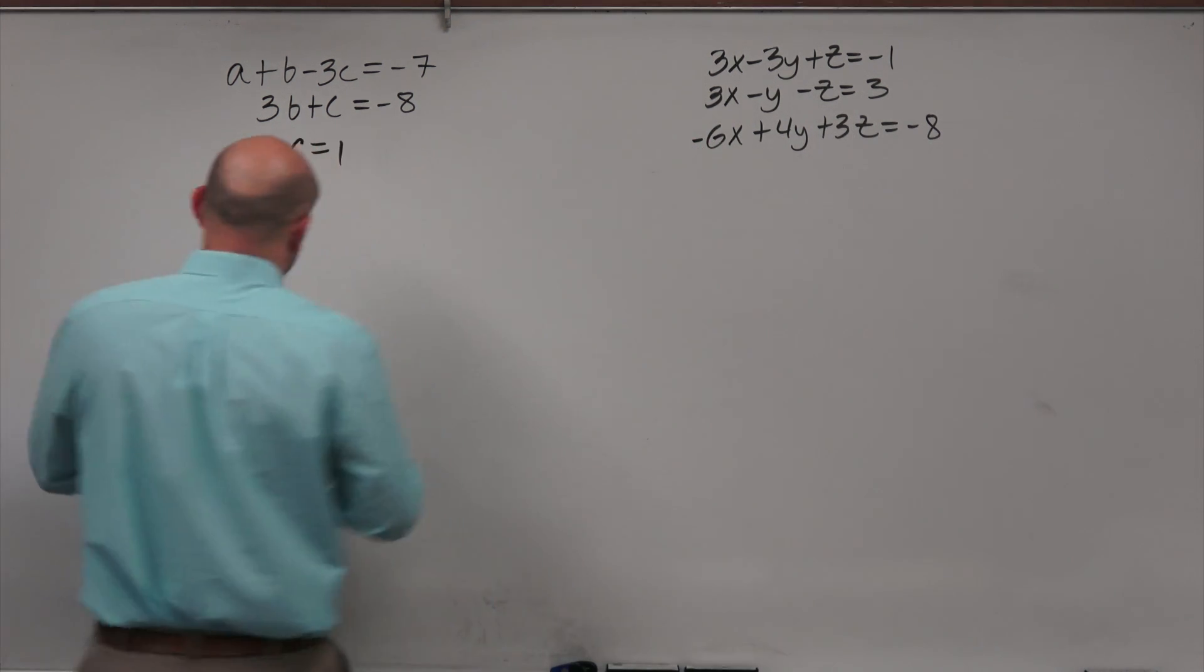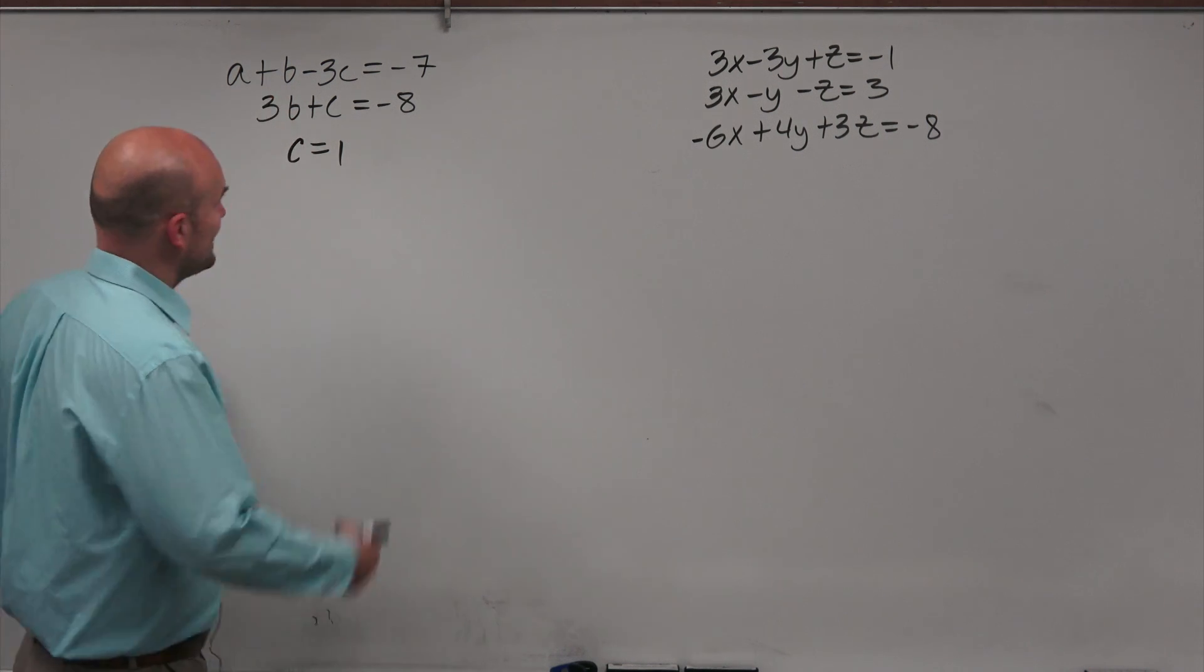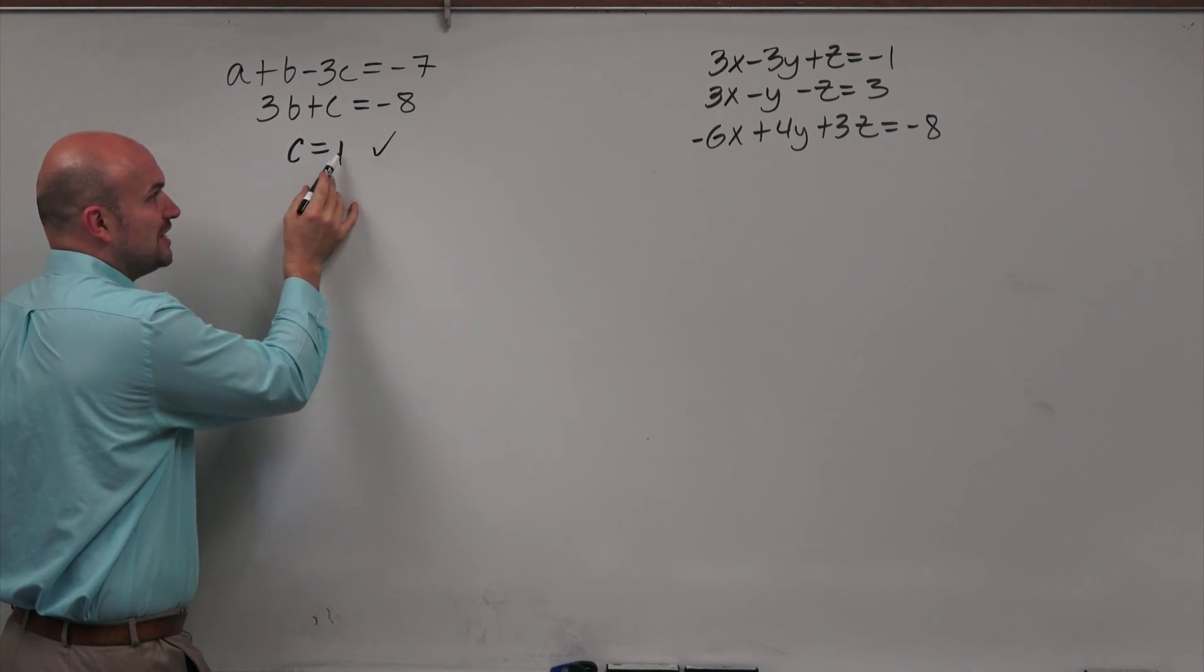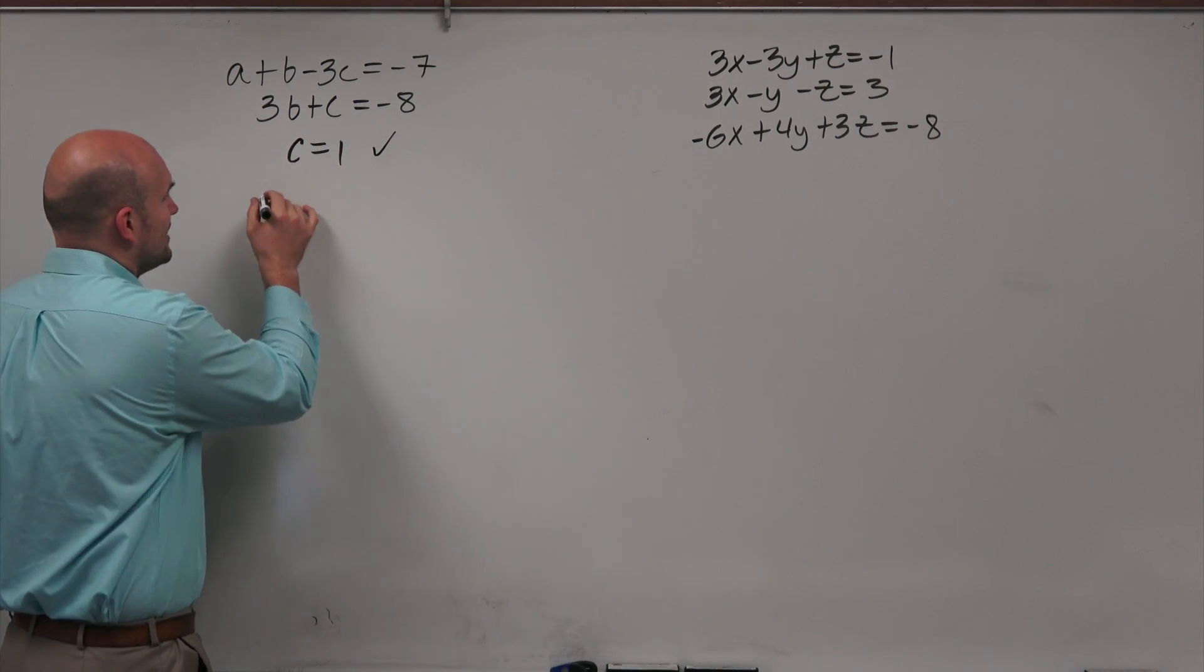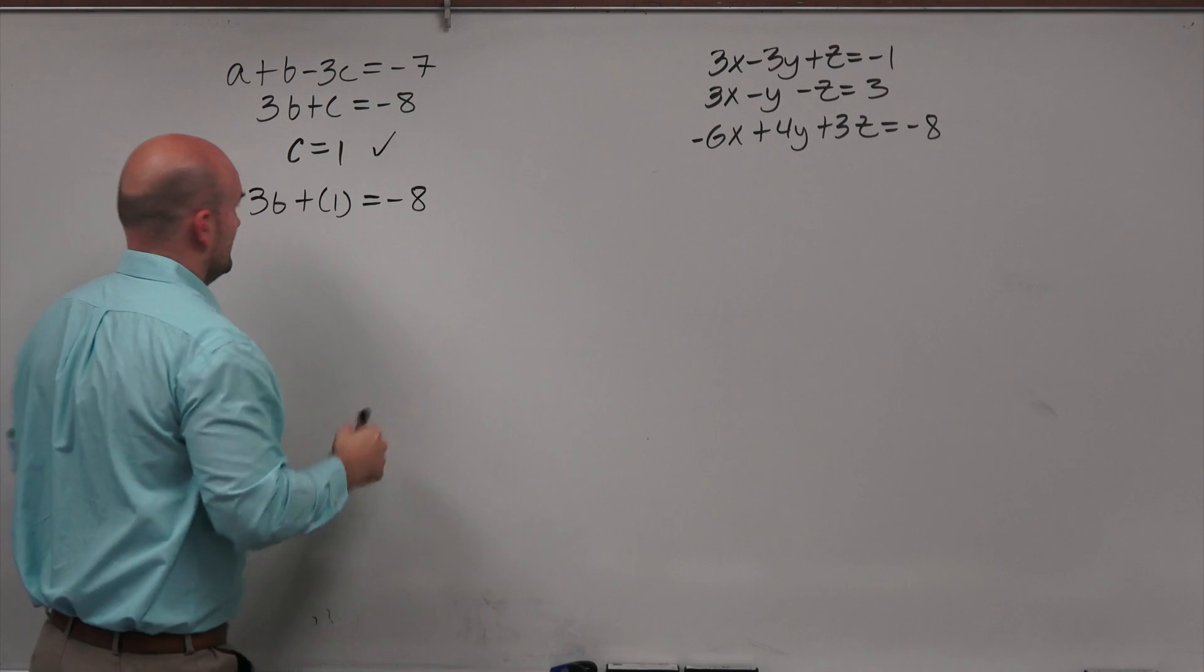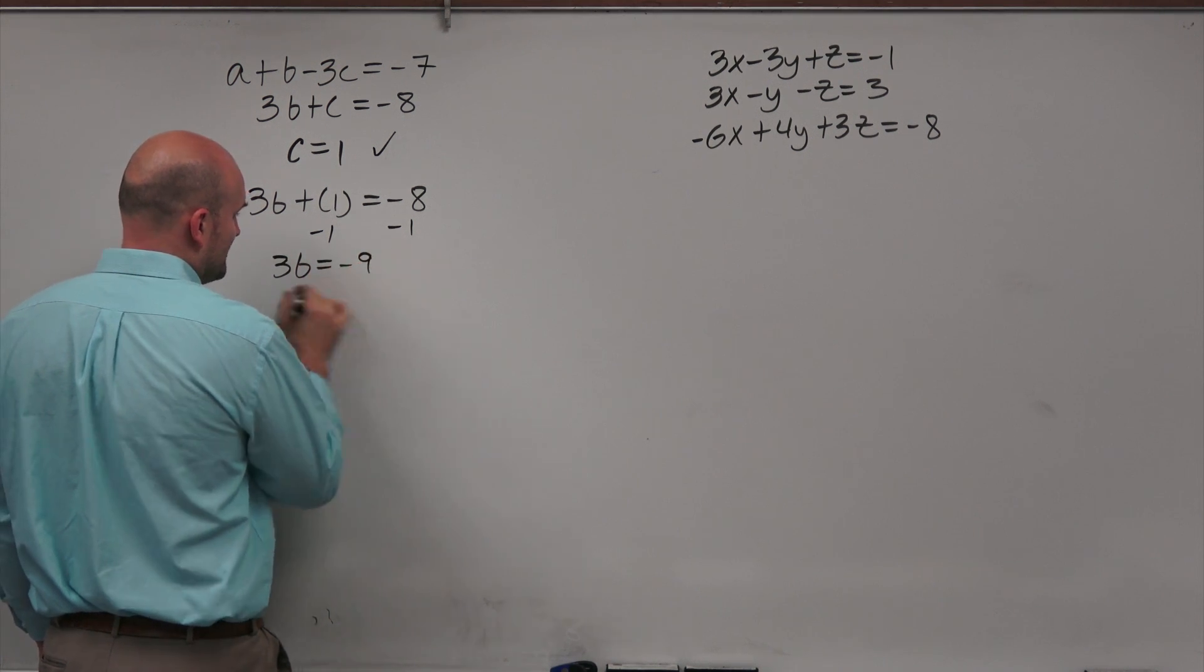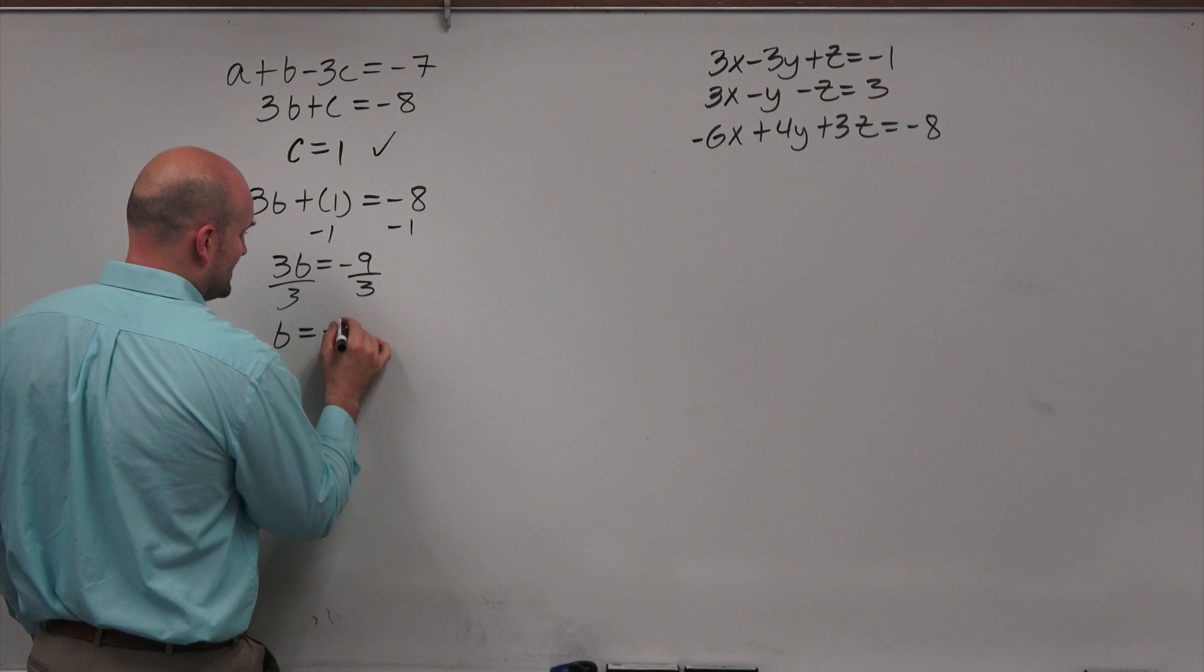Now, if I want to find the values for b and a, again, working one at a time. We already got one solution. Now let's see, can we substitute the value of c into another equation to find another value? And we can. You can do 3b plus 1 equals negative 8. Now, I just need to solve for b. So we're going to subtract 1. 3b equals negative 9. Divide by 3. b equals negative 3.